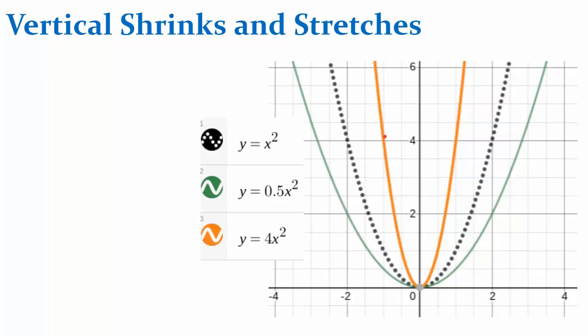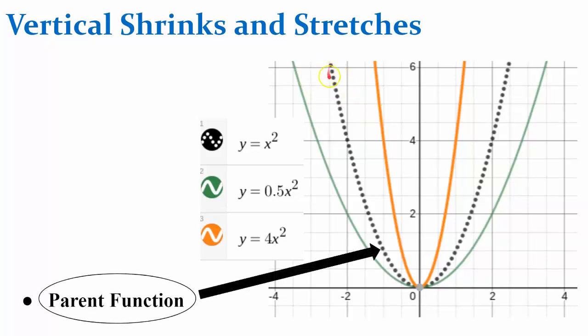Let's talk about two transformations, a vertical shrink and a vertical stretch. First, we have our parent function here, graphed, y equals x squared, noticing that a is 1. And here's our function.